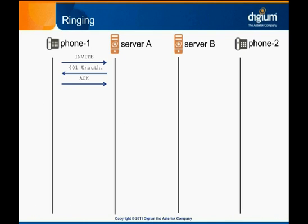Next, the phone provides its credentials in a modified INVITE message. These credentials are sent in an encrypted digest or other secure form to make it harder for an attacker to discover them. Asterisk validates the credentials provided by the phone. Two things then happen: Asterisk responds to the phone with a message called 100 Trying, which tells the phone that the INVITE was received and that the request is being processed. At the same time, Asterisk looks up the dialed number in its dial plan, finds that the matching extension is a SIP dial to server B, and establishes a new SIP call to server B.